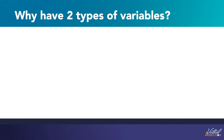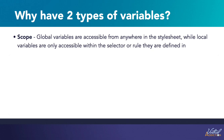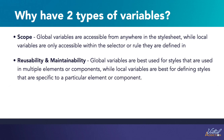CSS global and local variables have different use cases and serve different purposes in a stylesheet. The main difference is scope: global variables are accessible from anywhere in the stylesheet, while local variables are only accessible within the selector or rule that they are defined in. Both can be used to make CSS code more reusable — global variables are best for styles used across multiple elements or components, while local variables are best for styles specific to a particular element or component.